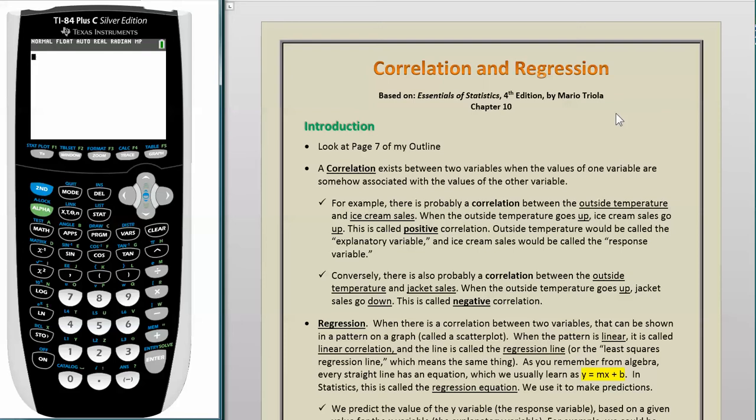Conversely, there is also probably a correlation between the outside temperature and jacket sales. When the outside temperature goes up, jacket sales go down. This is called negative correlation.